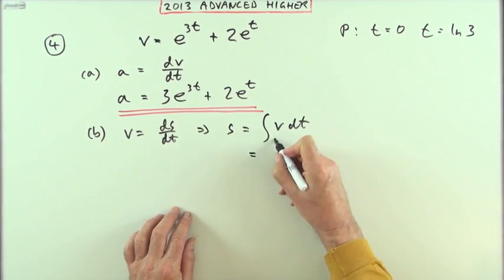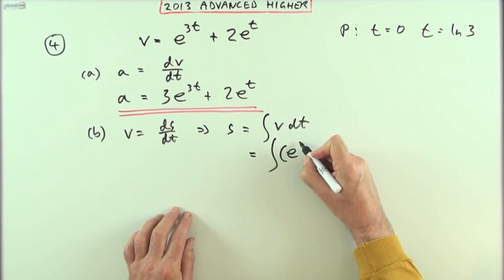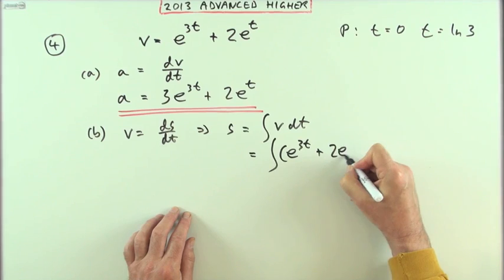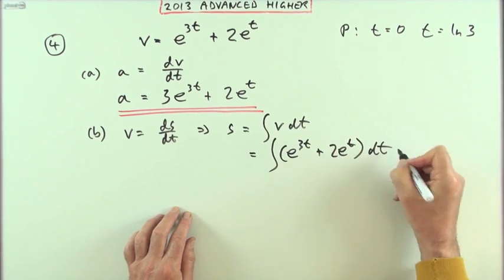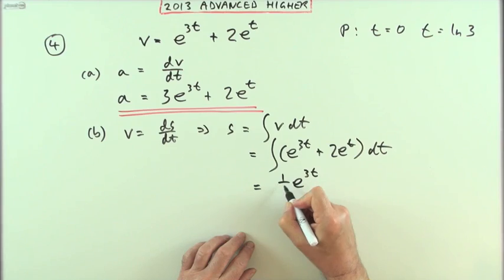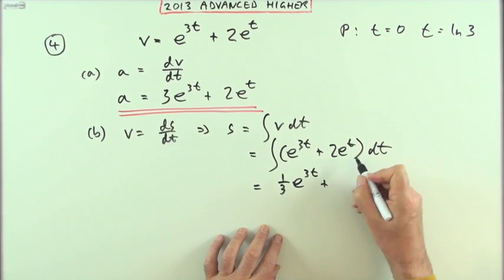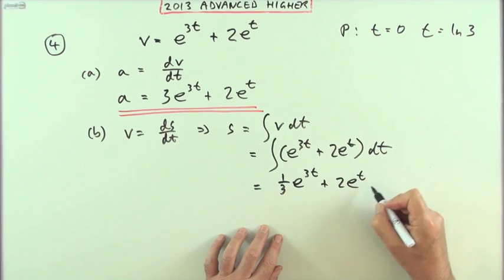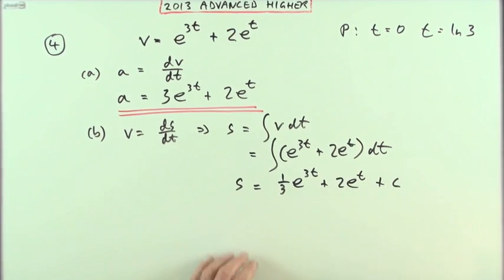So what have I got? S equals the integral of e to the 3t plus 2e to the t dt. So that's going to be integrating at this time, so that remains the same, but now it's divided by that inner derivative, and that just remains the same. But for this distance, there could be some constant.